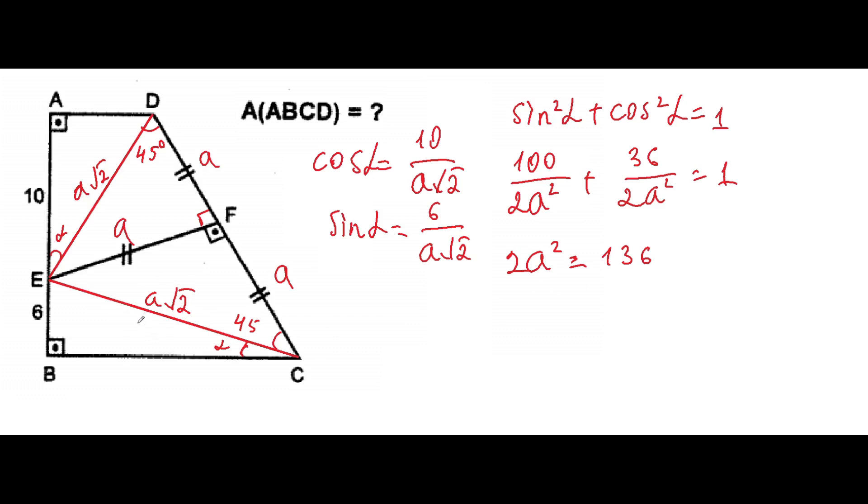The area of the trapezoid will be equal to (AD + BC) over 2 times the altitude, which is 16, and it will be equal to (AD + BC) times a.